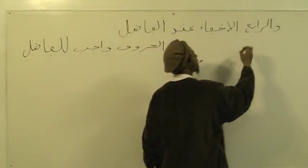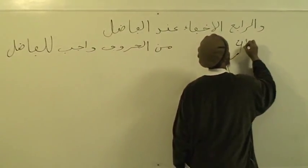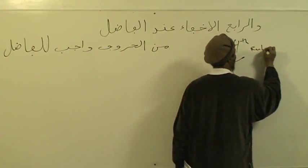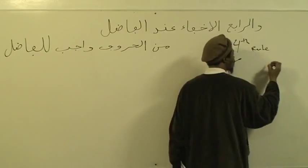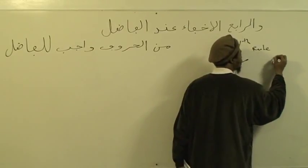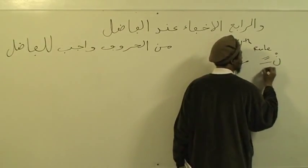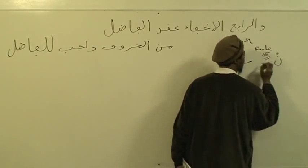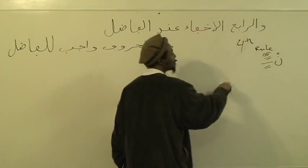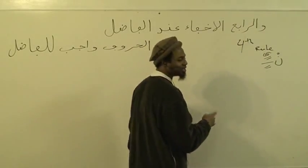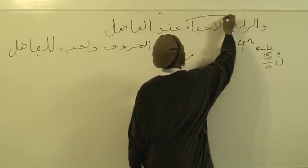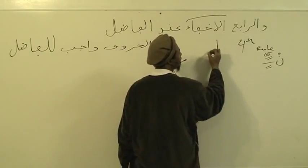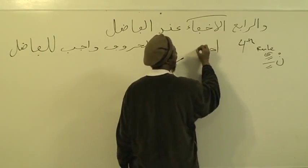It says Warabir, and the fourth rule — the fourth rule for Nunisakina and Tanween is called Ikhfaa.